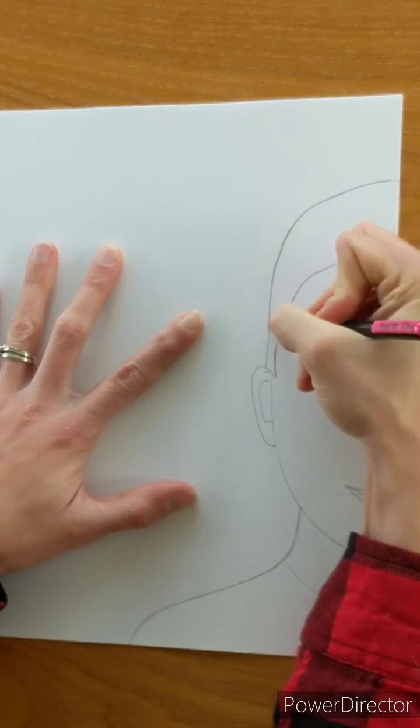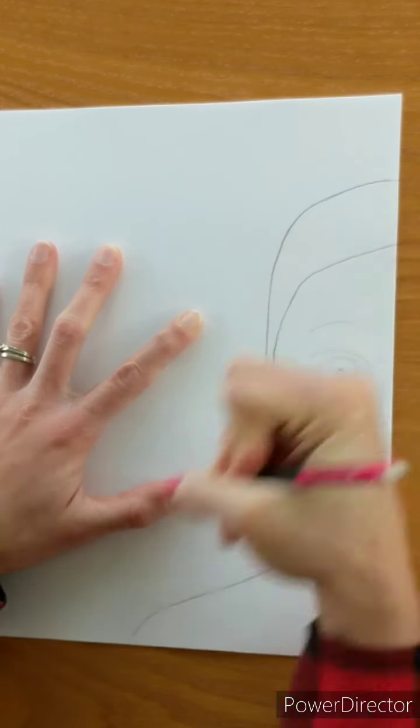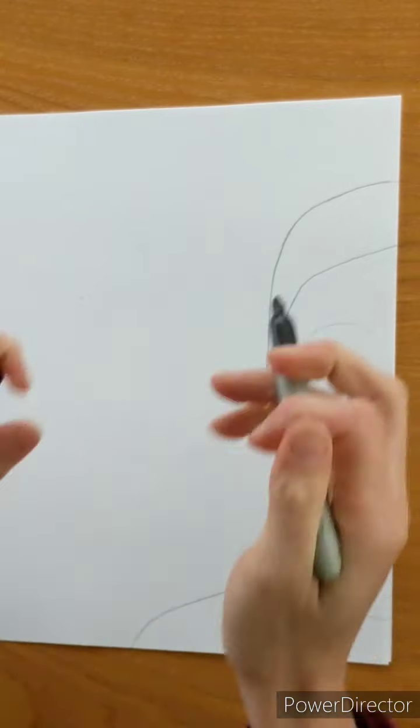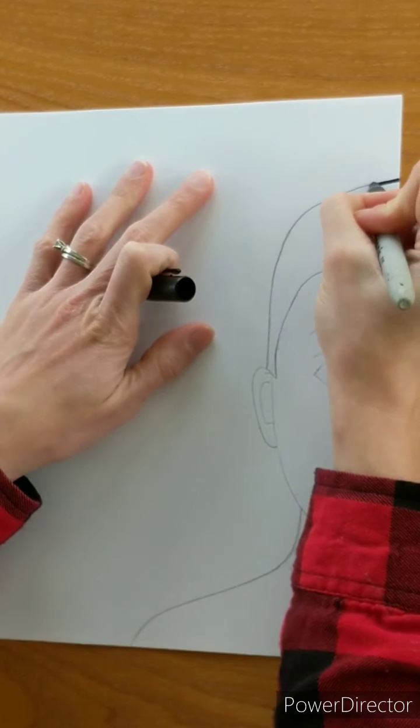When you are done and you feel like you are ready to outline, you can grab a marker and go over all of your pencil lines.